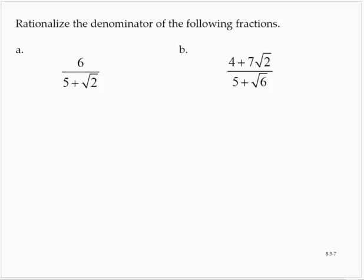Rationalize the denominator of the following fractions. The first is 6 over 5 plus the square root of 2. When we have multiple terms in a denominator and one of the terms is irrational — in this case the square root of 2 — what we do is multiply by the conjugate of the denominator.